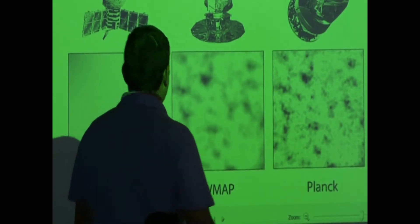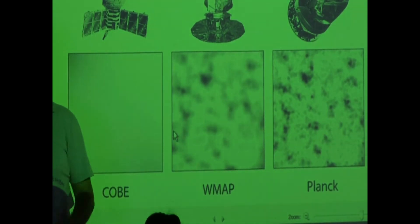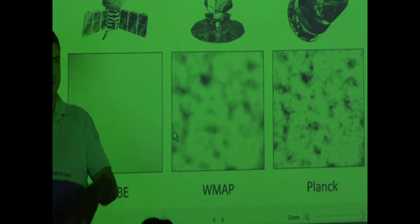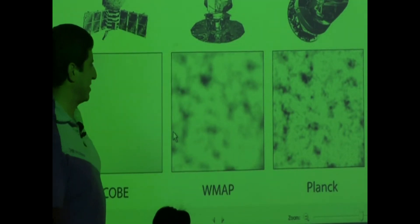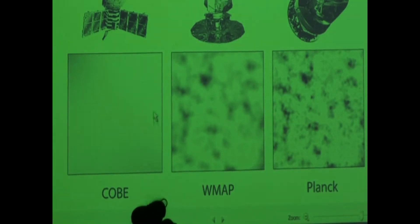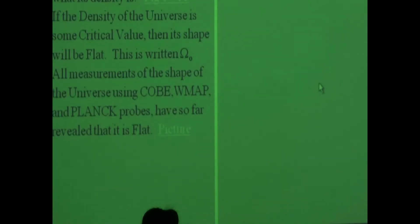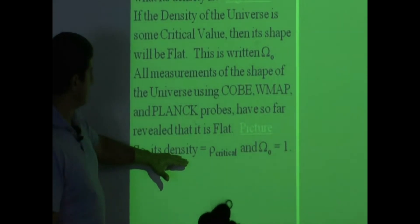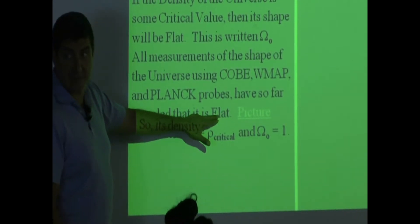Based on these pictures and all the data we're getting back, we can determine the density of the universe, how old the universe is, and the Hubble constant — all of those things. So that means the density of the universe is equal to its critical density, because we know from our measurements that it's flat.